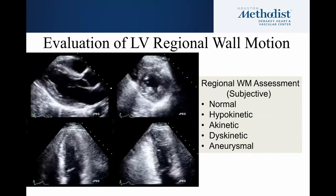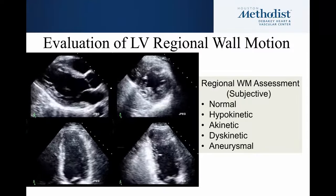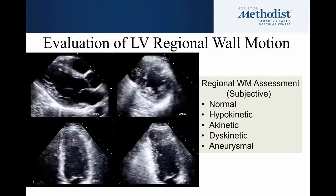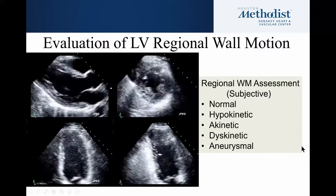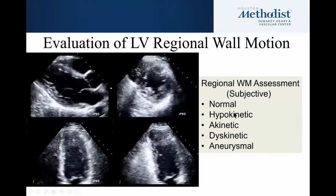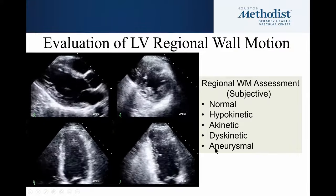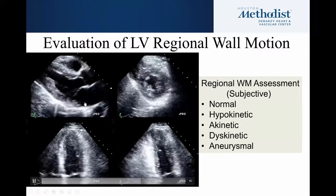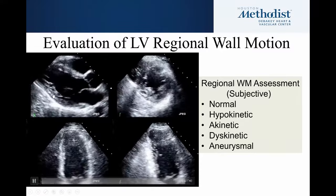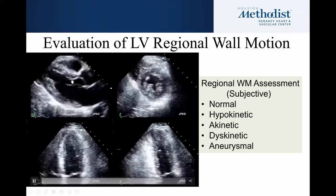In the evaluation of regional wall motion, the ventricle is divided into 17 segments. For each segment, we do a subjective interpretation of the function of that segment by calling it normal, hypokinetic, akinetic, dyskinetic, or aneurysmal. This is done by integrating both an impression of the thickening of that segment as well as the movement of the endocardium towards the center of the cavity.